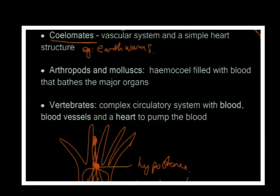Then we have arthropods and mollusks. Mollusks include your snail-type family, and arthropods include insects and spiders. They have a cavity called a haemocoel filled with blood that bathes the organs. In that haemocoel fluid you have nutrients like glucose, oxygen, and carbon dioxide and waste diffusing out into the haemocoel and then out of the body.